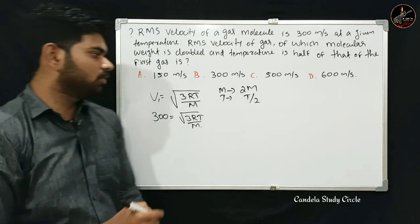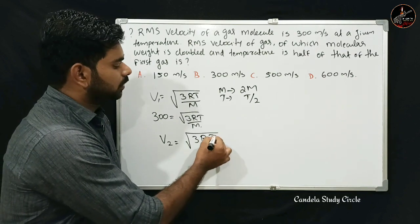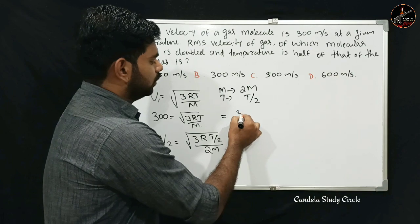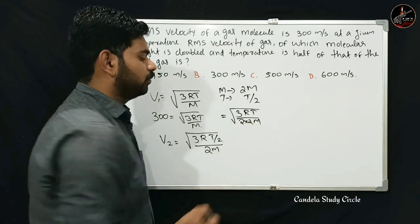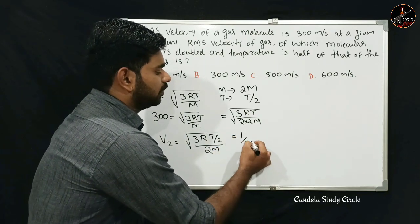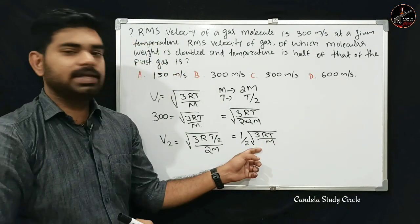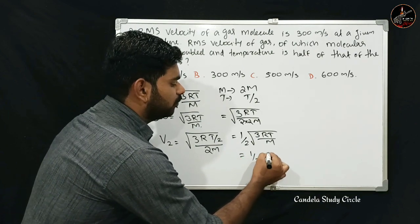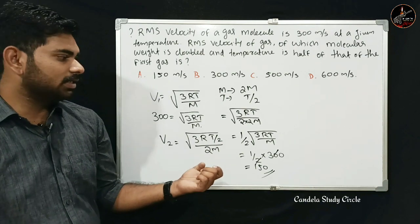In the new case, mass equals 2M and temperature equals T/2. So new RMS equals under root of 3R(T/2) divided by 2M, which equals under root of 3RT divided by 4M. This is half of the original RMS velocity, giving 150 meters per second.